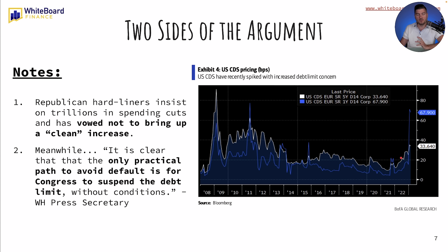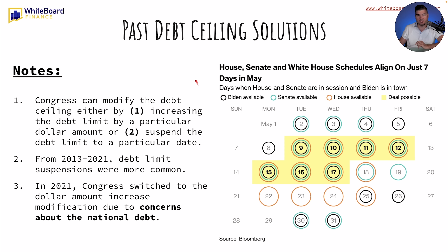There are two sides of the argument. Republicans are insisting on trillions in spending cuts and have vowed not to bring up a clean increase. Meanwhile, the White House press secretary says the only practical path to avoid default is for Congress to suspend the debt limit without conditions. House, Senate, and White House schedules align on just seven days in May. You can see when Biden is available, when the Senate is available, and when the House is available. The yellow highlighted dates — the 9th, 10th, 11th, 12th, 15th, 16th, and 17th — are when a deal is possible.